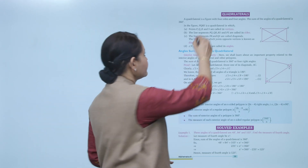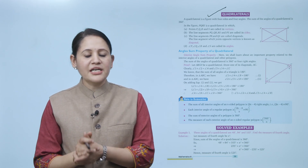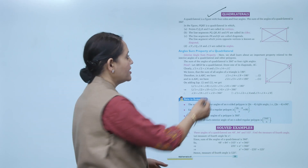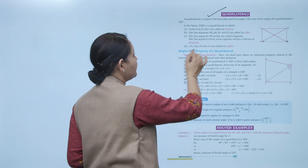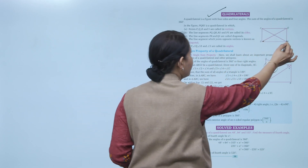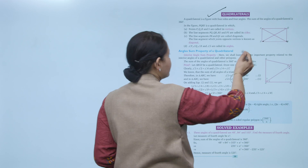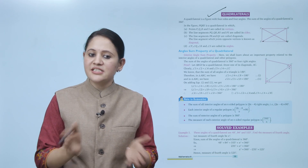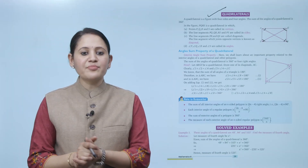Next, quadrilaterals. A quadrilateral is a figure with four sides and four angles. The sum of the angles of a quadrilateral is 360 degrees. In the figure, PQRS is a quadrilateral where P, Q, R, and S are the vertices. Line segments PQ, QR, SR, and PS are the sides. Line segments PR and QS are the diagonals, joining opposite vertices. Angles P, Q, R, and S are the angles of the quadrilateral.